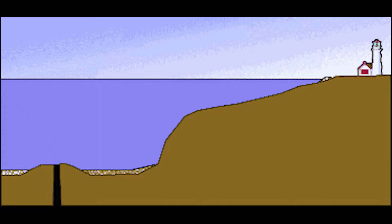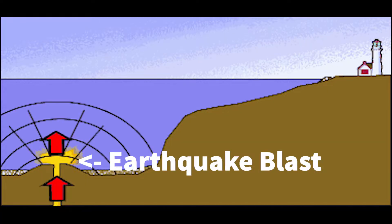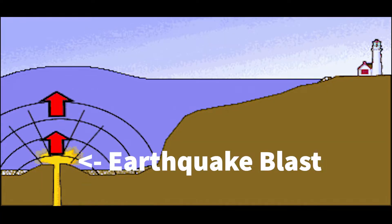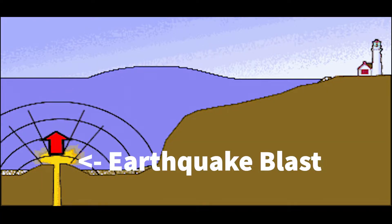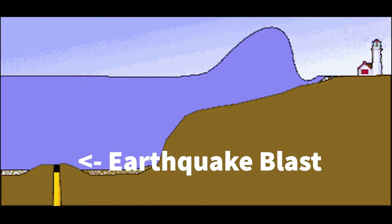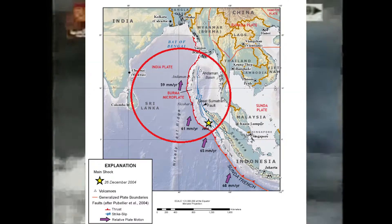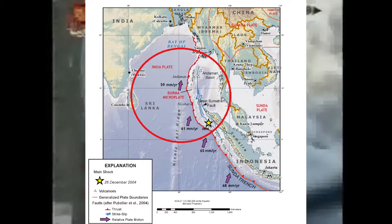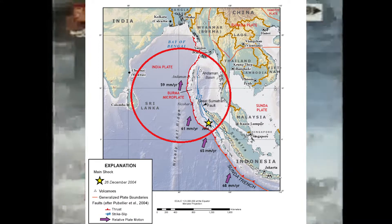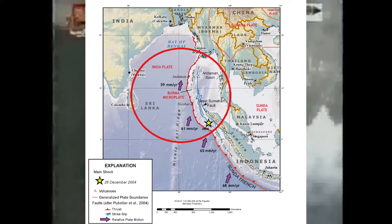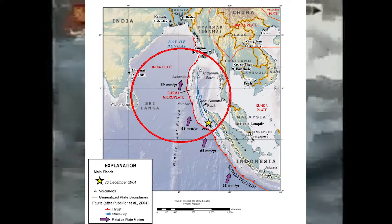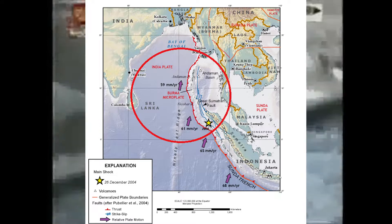It was so powerful that in just 20 minutes of the earthquake, the first several hundred foot waves hit the shoreline, turning the city into rubble. The earthquake was caused by a rupture along the fault of the Burma Plate and the Indian Plate.